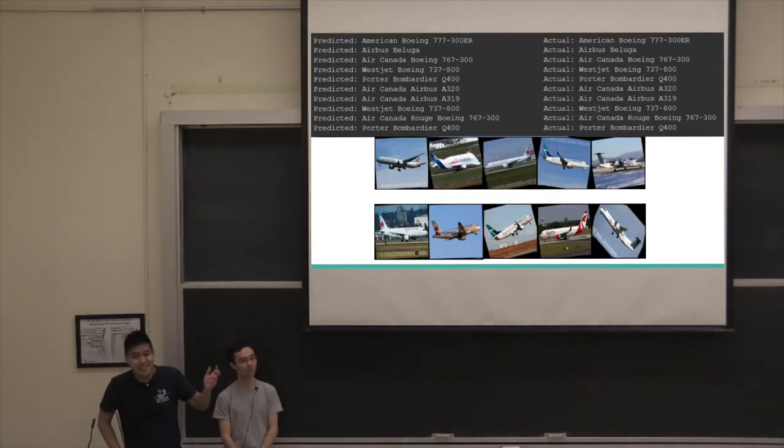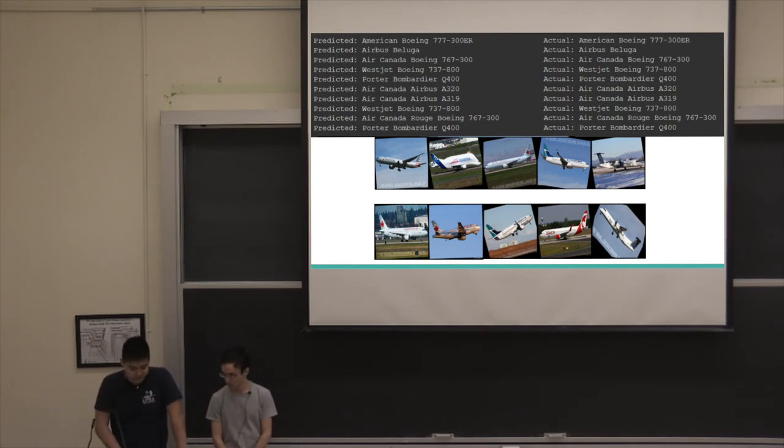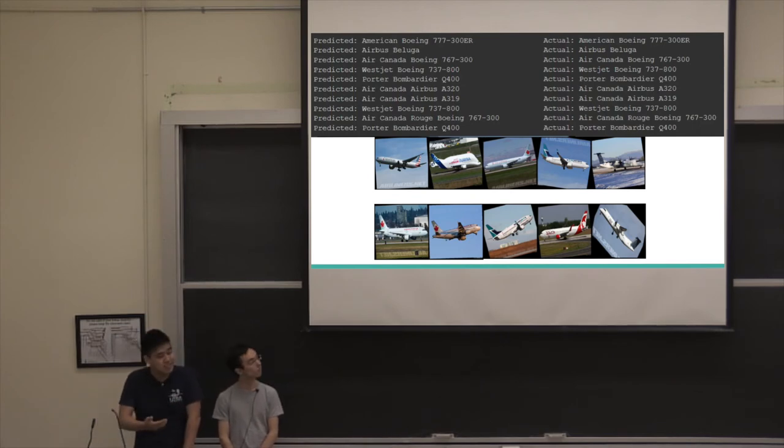So you're going to have to take my word for this, but these are some predictions that we made. Just some random samples from our, I think, 600 image test set. And it got all of these correct. You can see the variety of different images and angles, and the planes are in different states. They're on the ground, they're in the air, they're in different lighting.